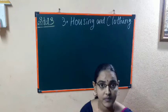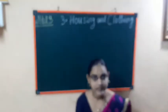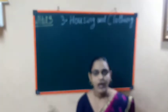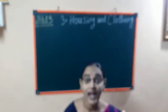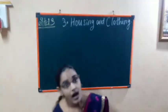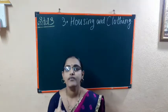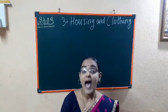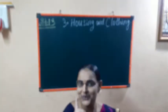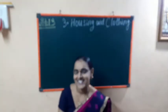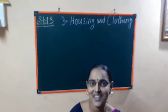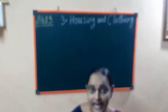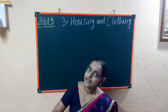We have already learnt in this lesson about the first point. The first point is 'Good and Clean House.' We have learnt about the features of a good house. The features of a good house are: well lit, airy, and clean. A house should be well lit, airy and clean.